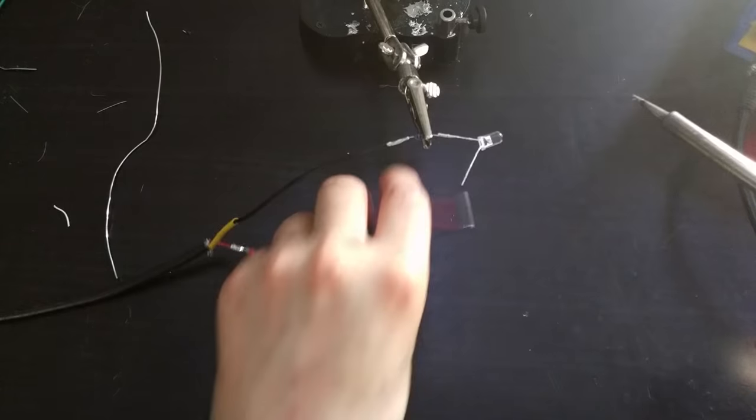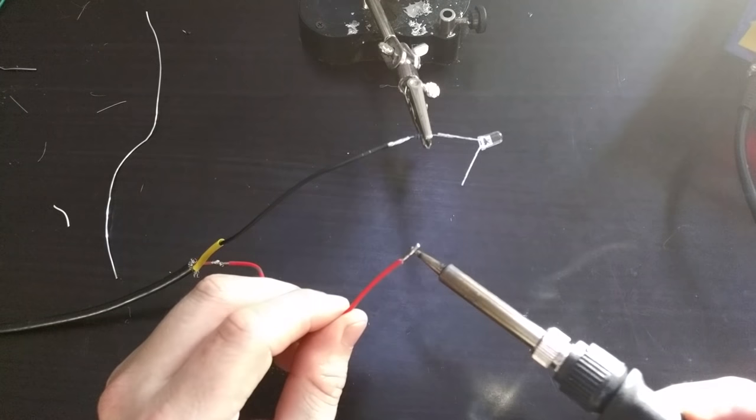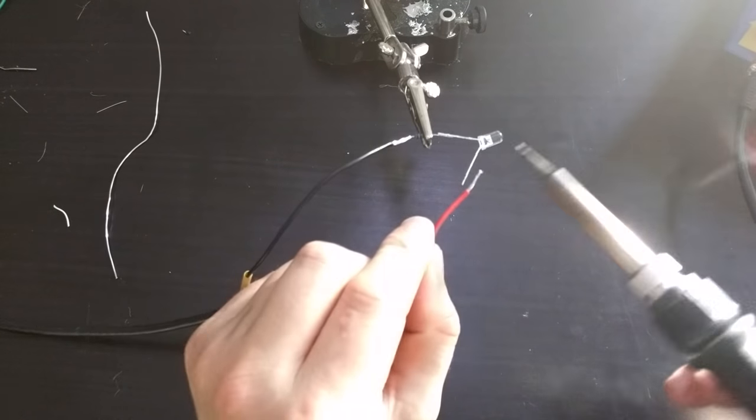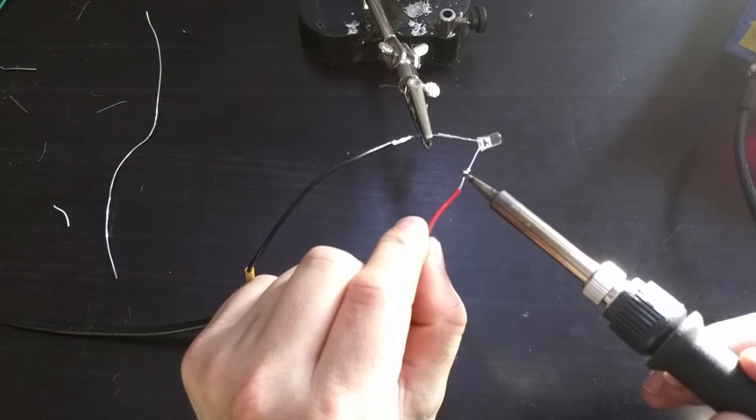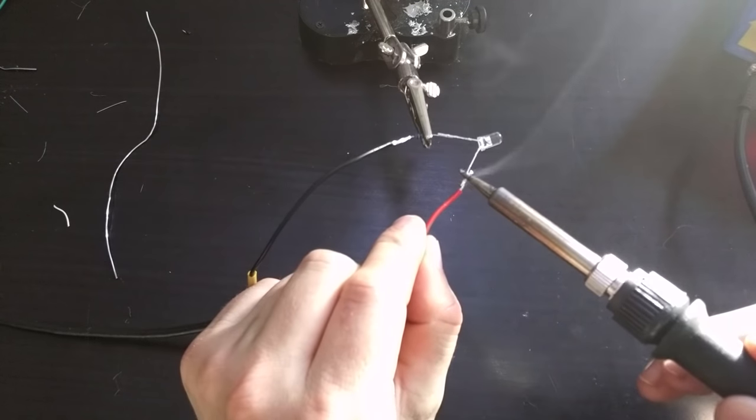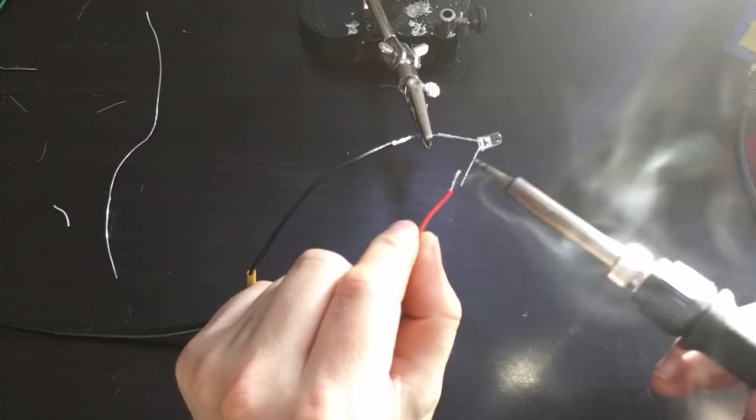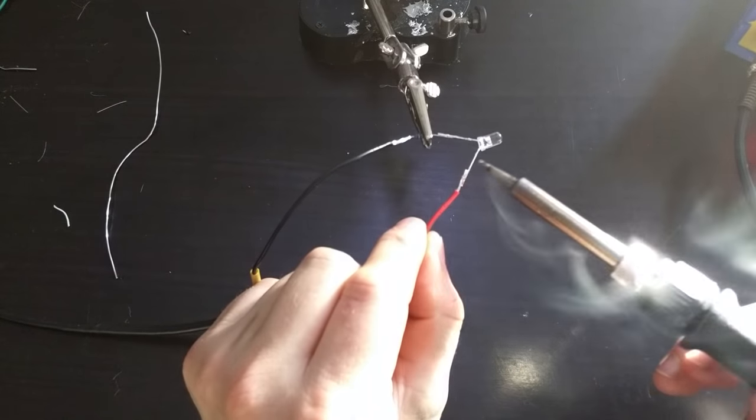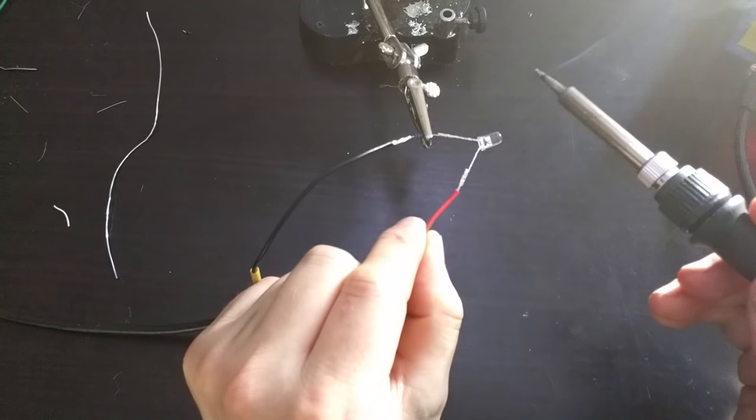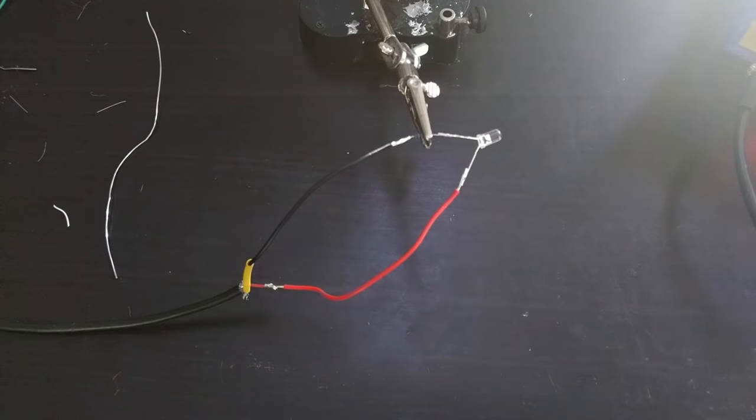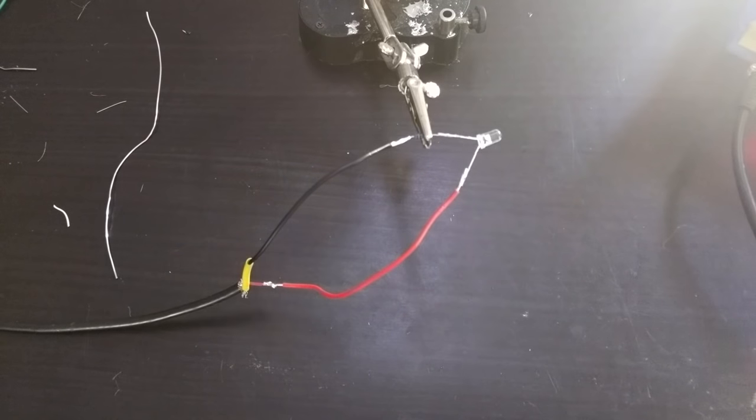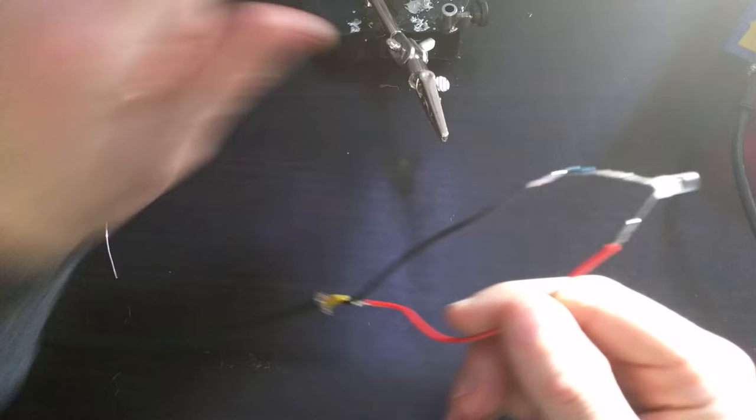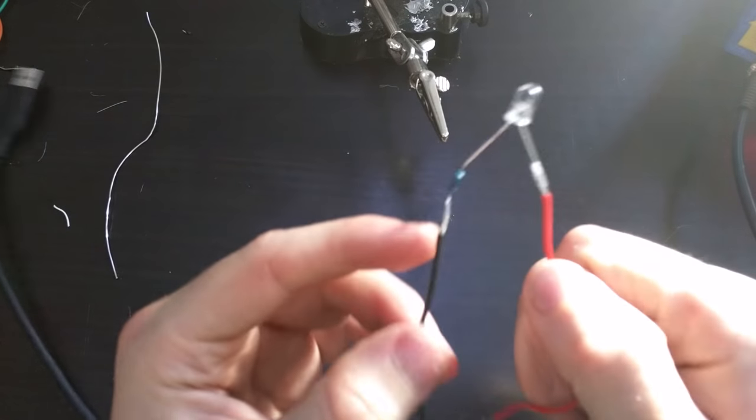The only thing that's left now is to join the positive wire coming from the USB cable to the positive side of the LED. Now, this isn't tidy or professional in any way at all. I'm just trying to not take forever. But there we go. That's our LED now, soldered together.